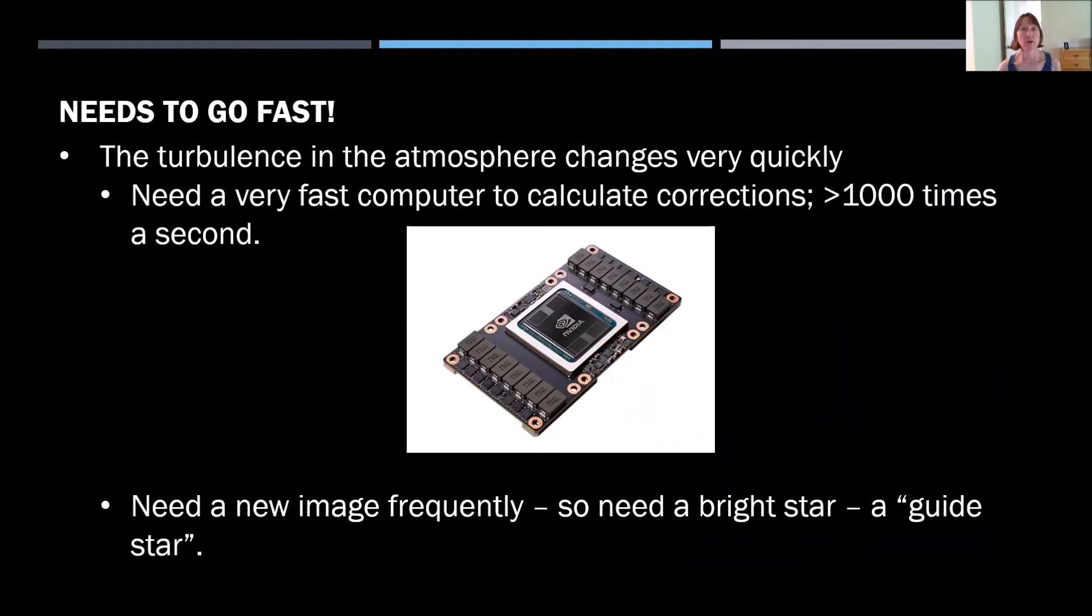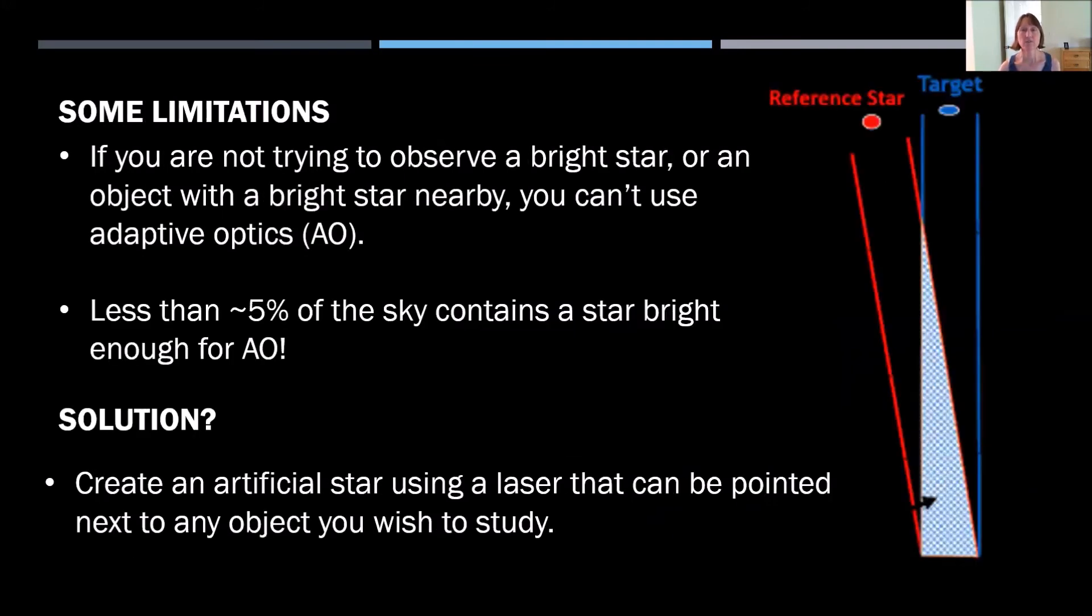There are some restrictions though. The turbulence in the atmosphere changes very quickly. That means that we need to do these corrections very quickly to keep up, more than a thousand times a second, which causes us to need very powerful computers. But it also means we need a new image very frequently. So we need a bright star, what we call a guide star. This guide star also has to be very close to what you're trying to study so that the light that the guide star goes through is the same kind of turbulence that your target is going through. The light from your target has to be going through the same area of turbulence or your corrections don't correct for what you're studying. Unfortunately, less than 5% of the sky contains a star bright enough to be able to do adaptive optics.